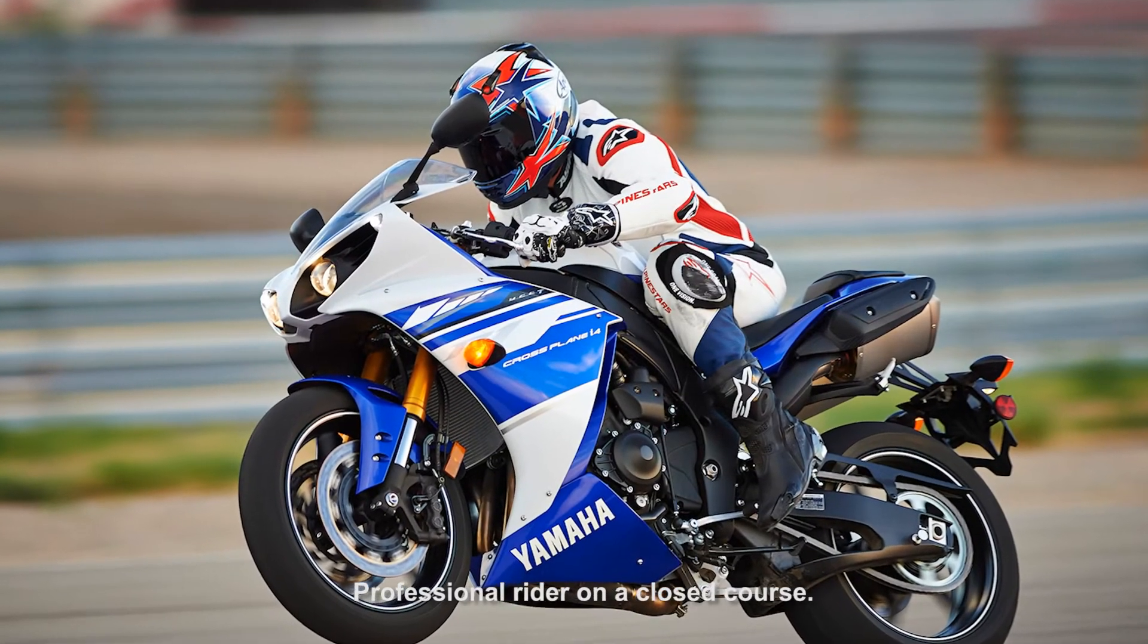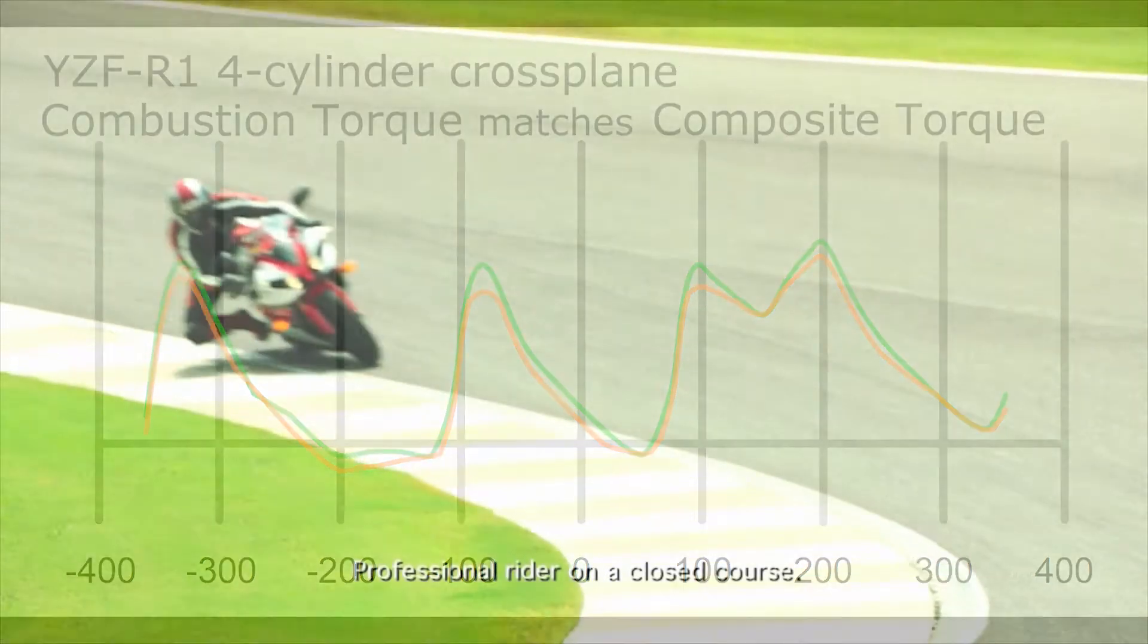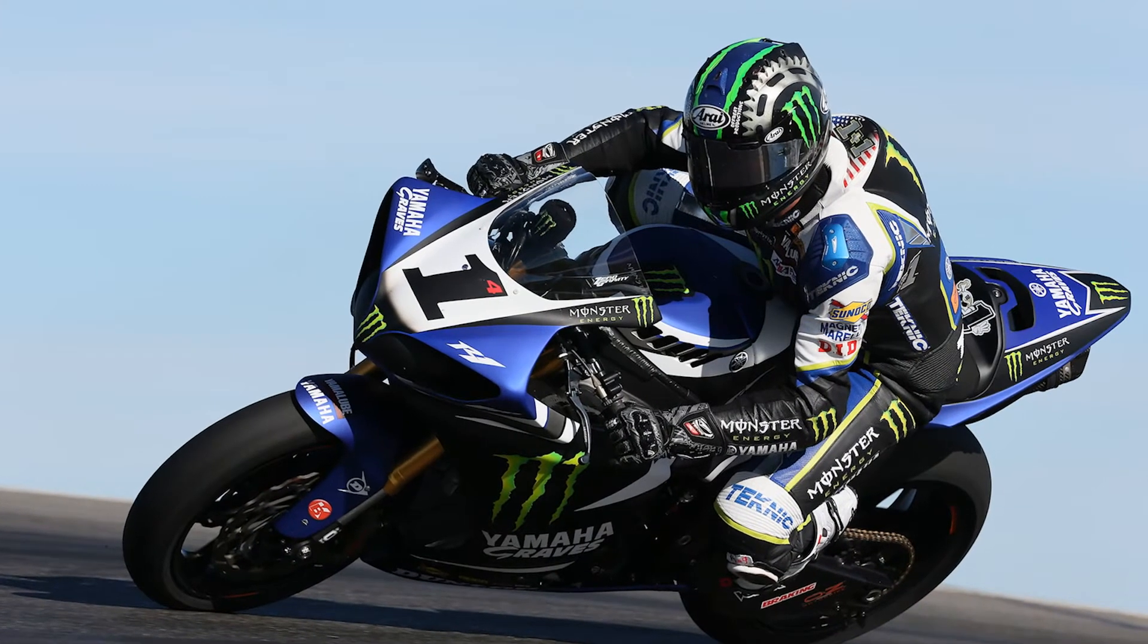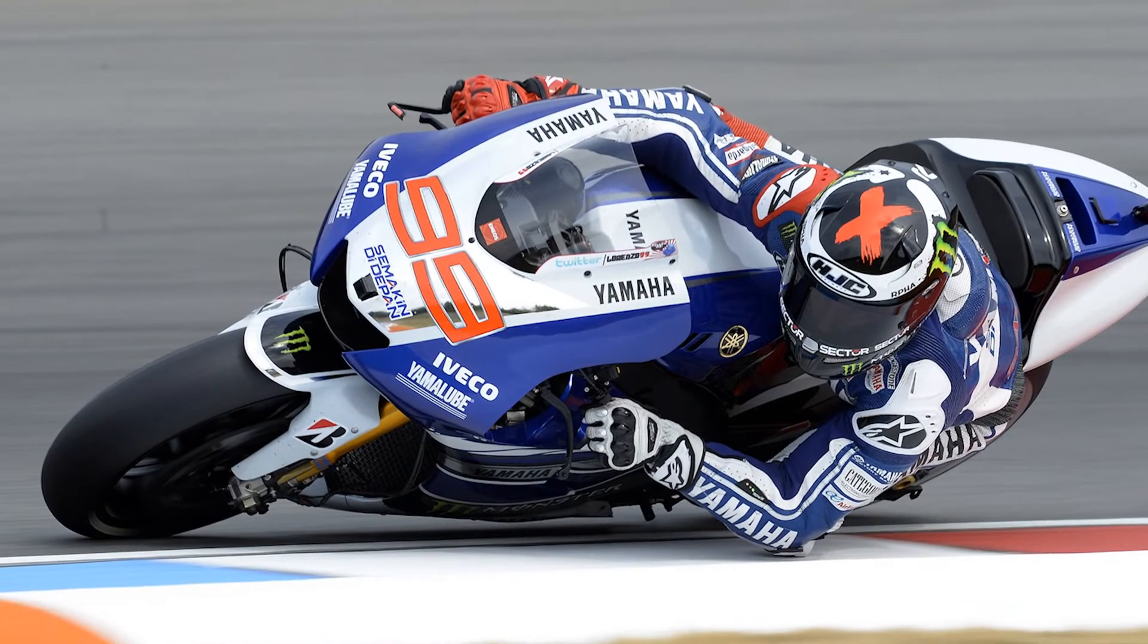In the latest generation Yamaha R1s with a 90-degree cross-plane crankshaft, the composite torque curve and the combustion torque curve are very closely matched, eliminating the noise and giving the rider a direct connection feeling from the throttle to the rear wheel, which helped win the AMA Superbike Championship for the last four years and the MotoGP World Championship four out of the last five years.